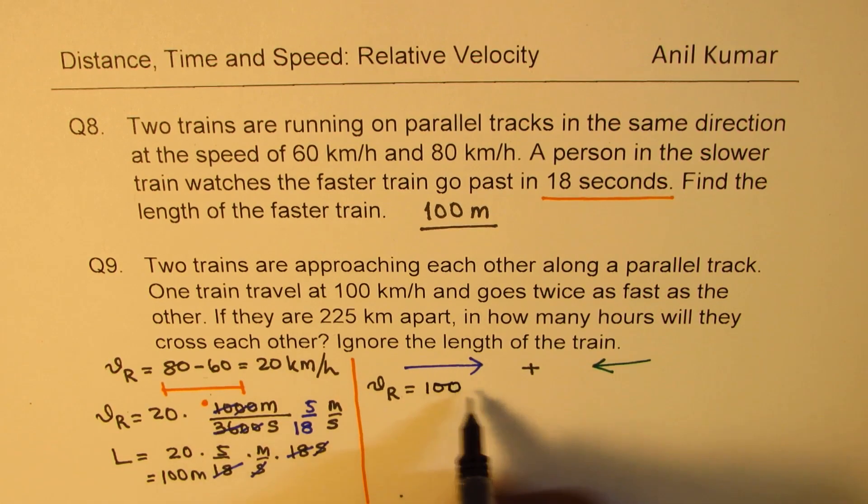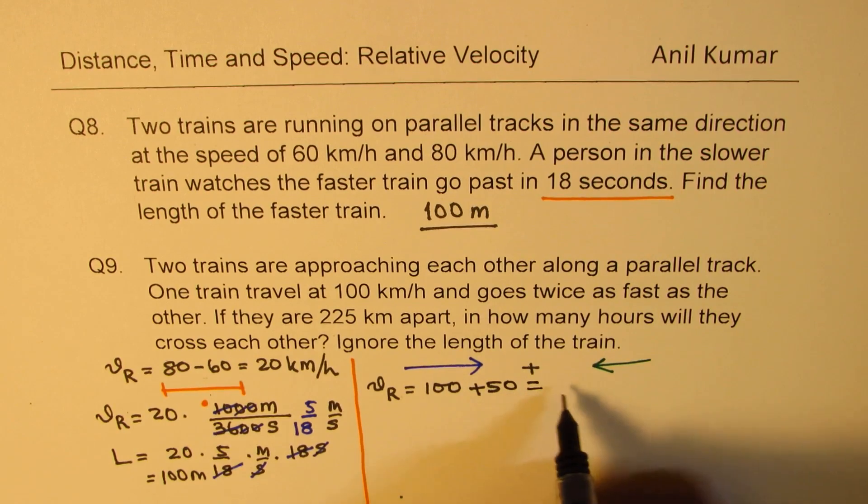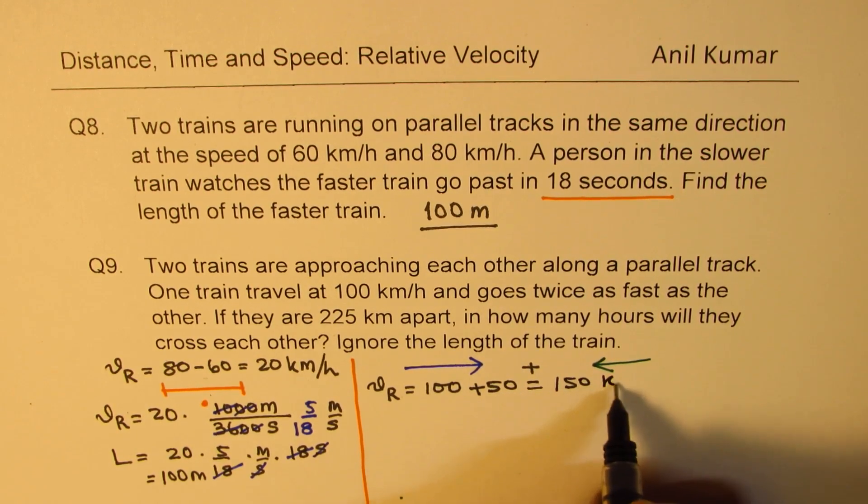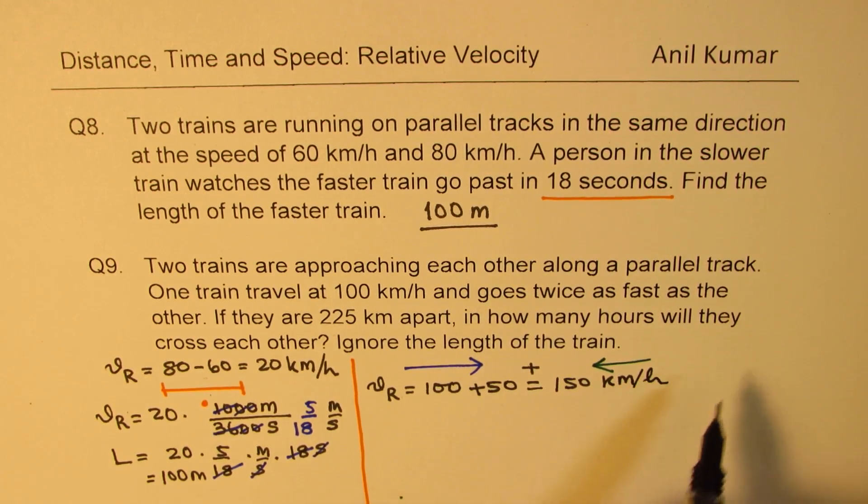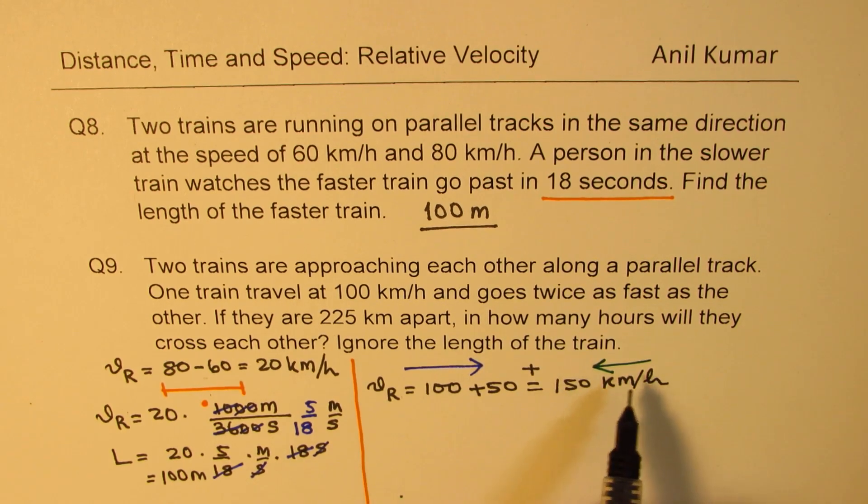So this one is 100, that one is 50. We can just add 50, and we get effectively 150 kilometers per hour as their relative velocity. They are approaching, so distance is decreasing faster.